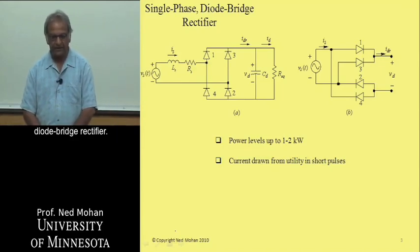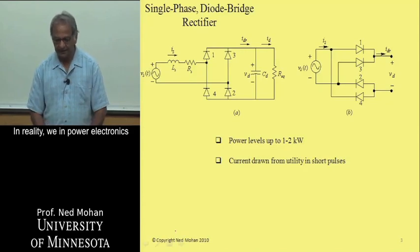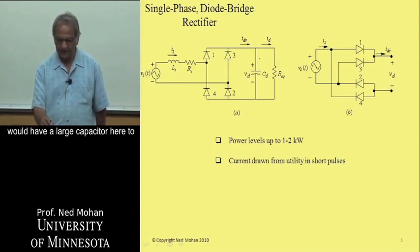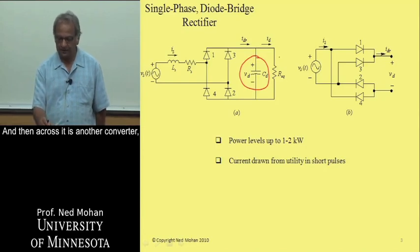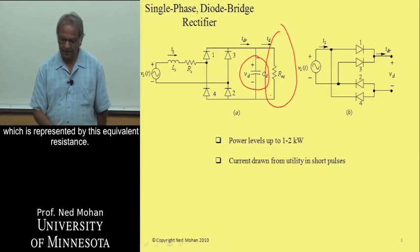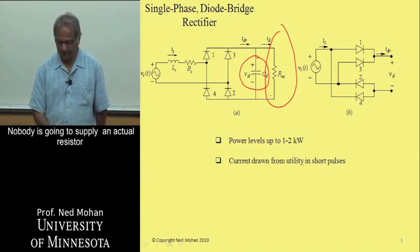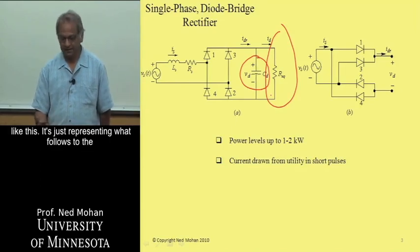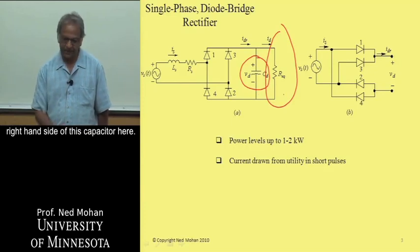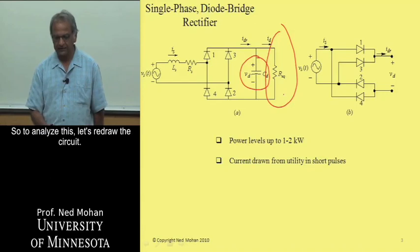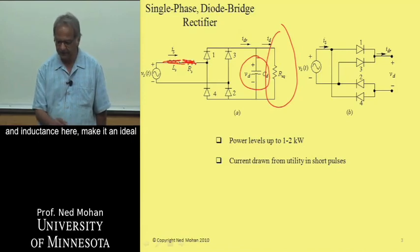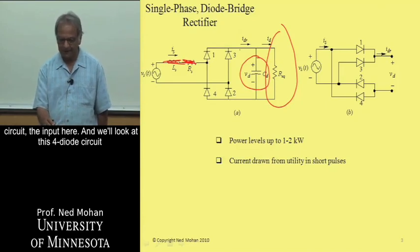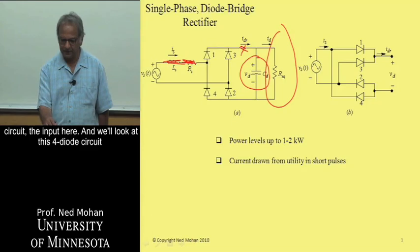Starting with single phase diode bridge rectifier, in reality, we in power electronics would have a large capacitor here to establish a DC voltage link. And then across it is another converter which is represented by this equivalent resistance. Nobody is actually going to supply an actual resistor like this. It's just representing what follows to the right-hand side of this capacitor. To analyze this, let's redraw this circuit. First of all, we'll ignore this resistance and inductance here, make it ideal circuit at the input.